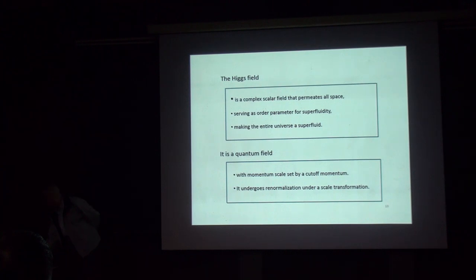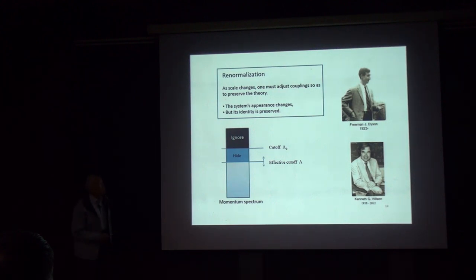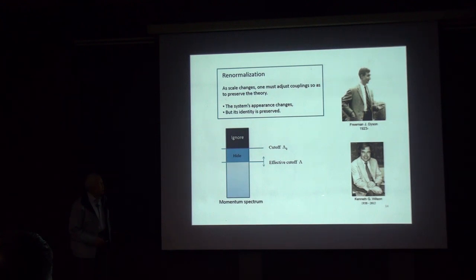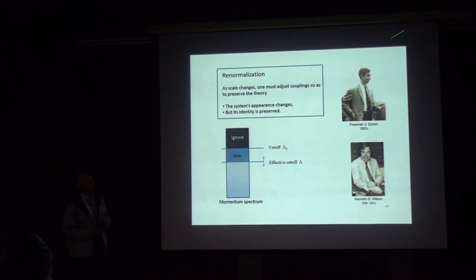Renormalization is an important phenomenon for quantum fields, discovered by Dyson and later extended by Wilson into something physical — Wilson received a Nobel Prize for this. In short, as the scale changes, one must adjust the couplings in the theory so as to preserve its identity. The system's appearance changes, but its identity is preserved.